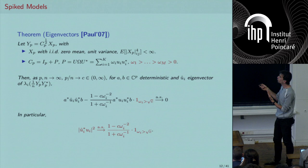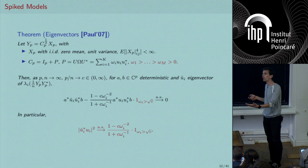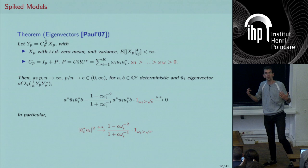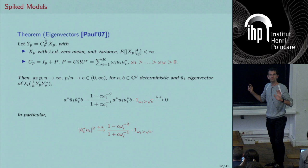However, beyond √c you start to have something, and the correlation is well characterized — it has a known limit very close to 1 when c goes to zero (the classical regime) or when ω_i is very large (strong signal power).